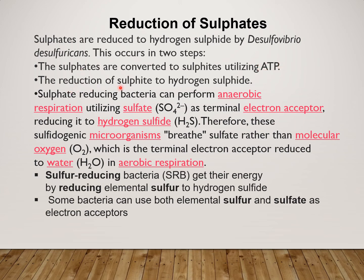Sulphite-reducing bacteria can perform anaerobic respiration utilizing Sulphite as a terminal electron acceptor. In aerobic respiration, oxygen is used as a terminal electron acceptor and water is produced. But in Sulphite-reducing bacteria, they carry out anaerobic respiration — instead of oxygen, they use Sulphite as a terminal electron acceptor. As they accept this electron, it undergoes reduction and results in the production of Hydrogen Sulphide.